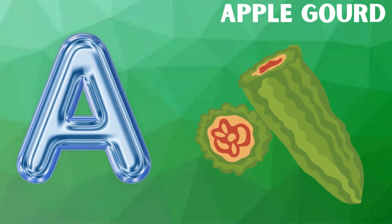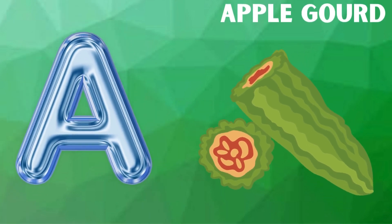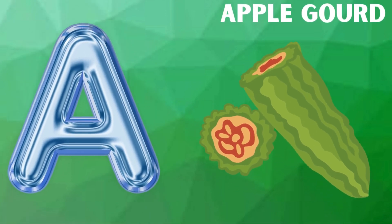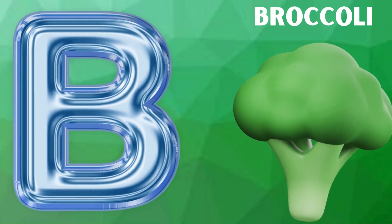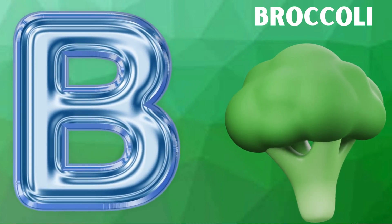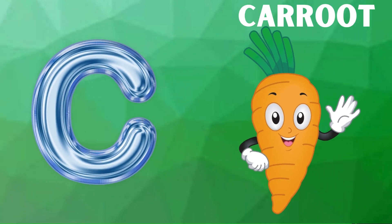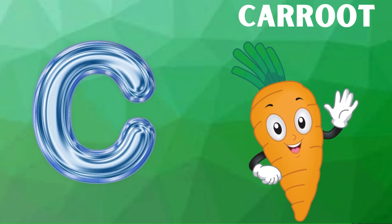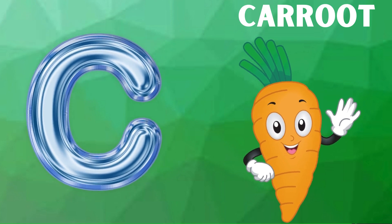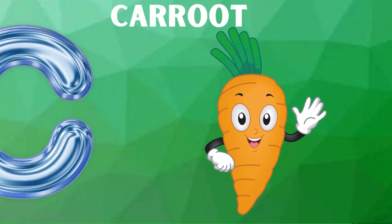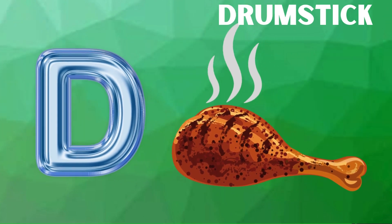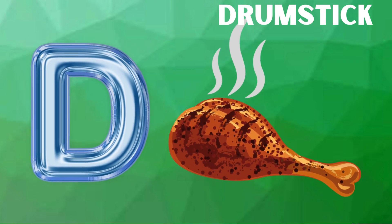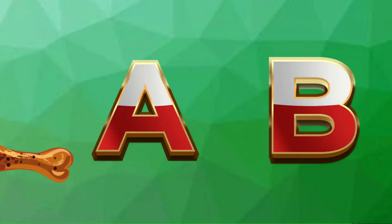A is for apple gourd, apple gourd. B is for broccoli, broccoli. C is for carrot, carrot. D is for drumstick, drumstick.